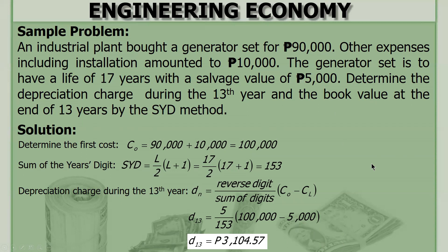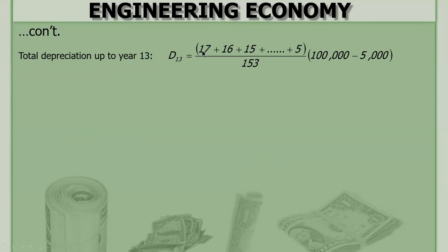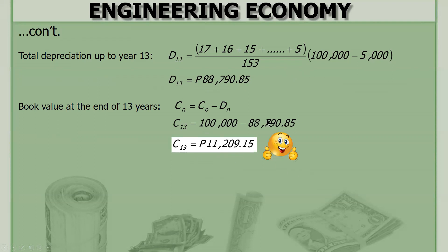For the book value at the end of 13 years, first get the total depreciation up to year 13. Add the reverse digits from year 1 through year 13: 17 plus 16 plus 15 plus 14 plus 13 plus 12 plus 11 plus 10 plus 9 plus 8 plus 7 plus 6 plus 5, with the common denominator of 153 and common factor of (first cost minus salvage value). The total depreciation is 88,790.85 pesos. Subtract this from the first cost to get the book value at the end of 13 years.